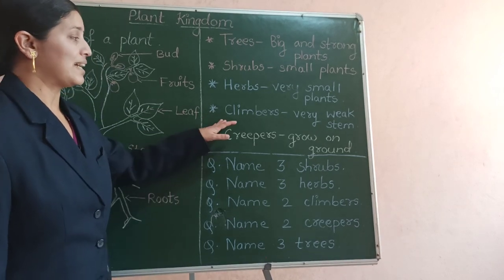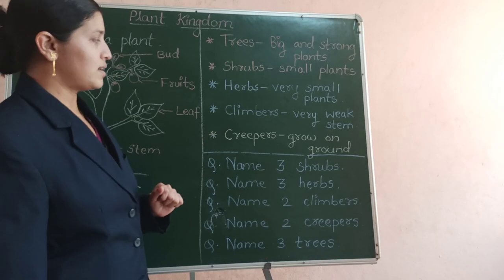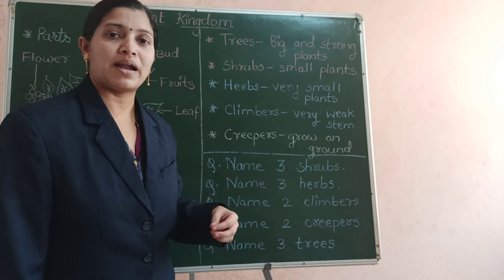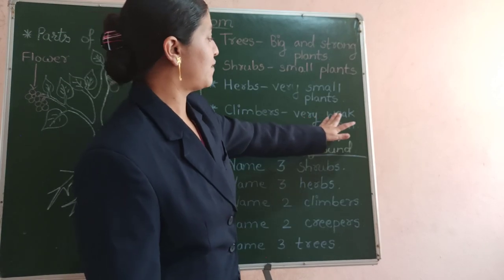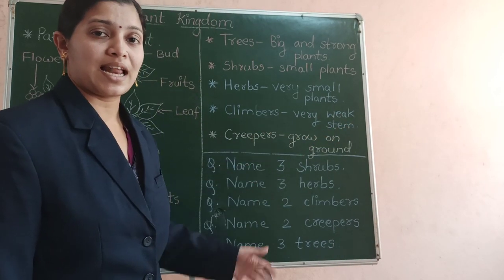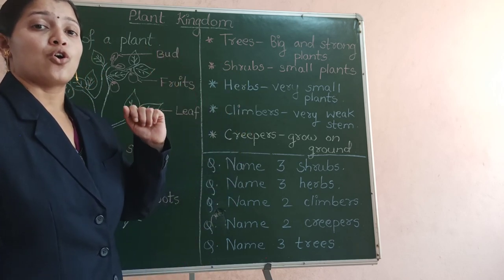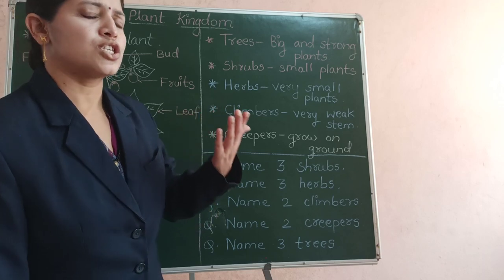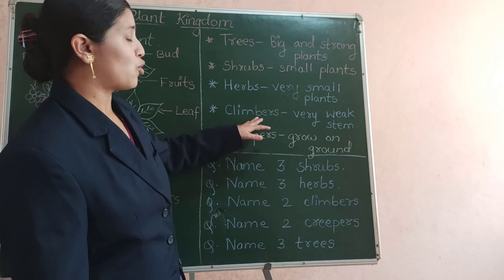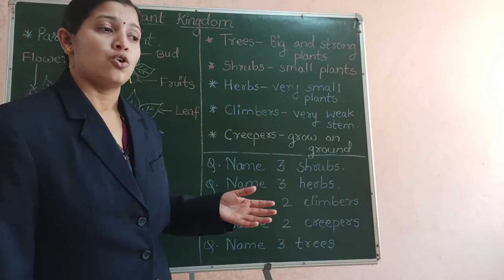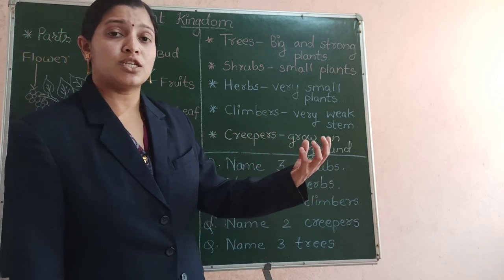Next are the climbers. From the word climbers, we know that these plants climb on other plants or any other object. These climbers have very weak stems and so they can't stand straight on their own. They require support of something for growing. They grow on a wall, some other plant, or any supportable object.